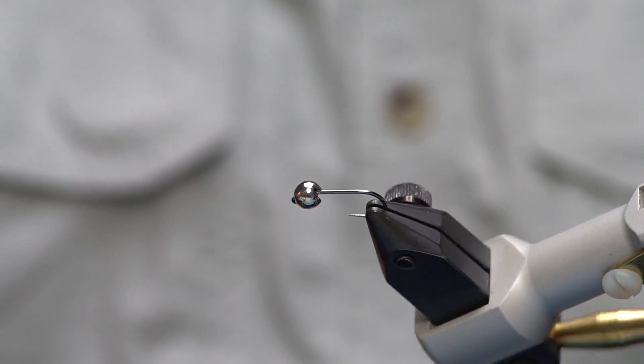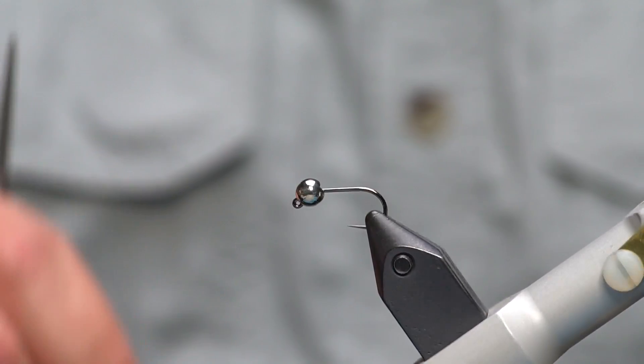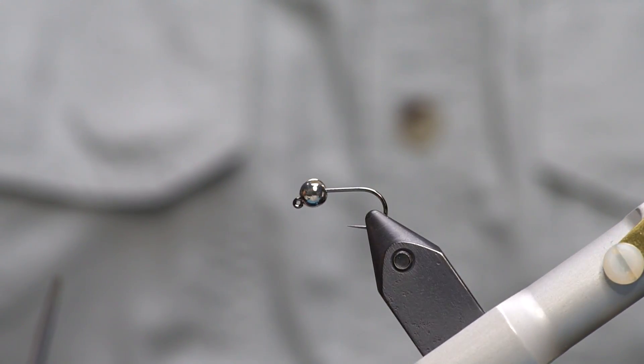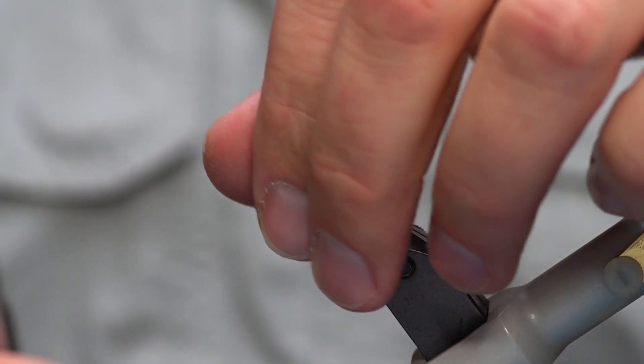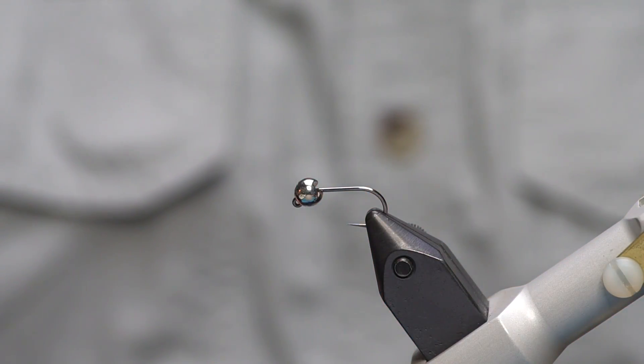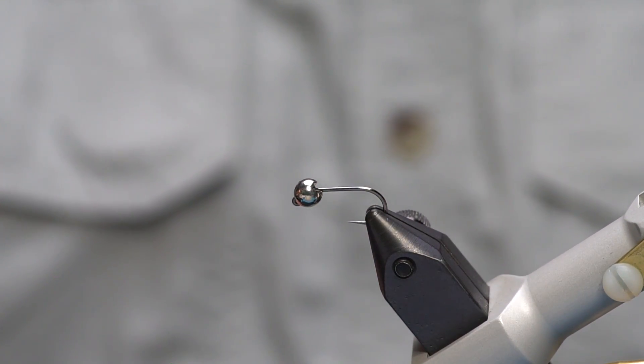Because it's a jig hook we've got a slotted tungsten bead on the hook and it's a good idea to tie some of these in various sizes and colors, but various sizes particularly.